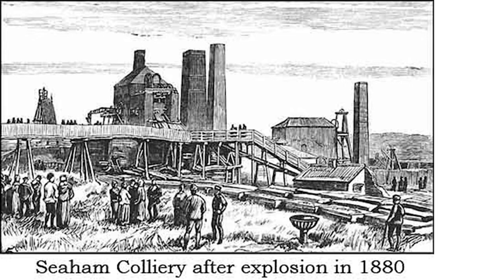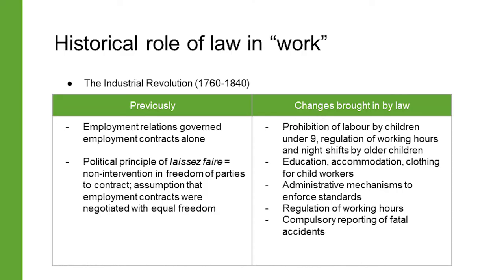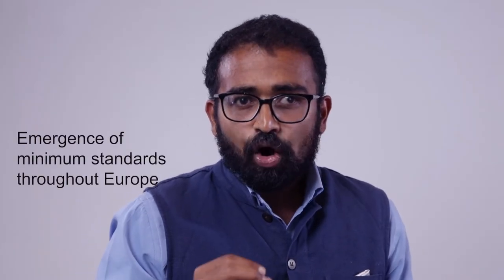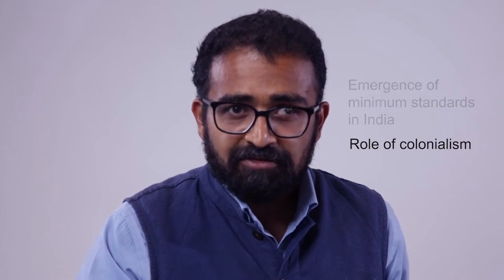The systematic reporting of fatal accidents was made compulsory, and basic safeguards for health and safety — especially in mines and in relation to boilers — were put in place. By the end of the century, nearly all European nations had a comprehensive set of regulations that affected work in nearly all industries. In India, however, there was an additional factor that led to the growth of law providing for the welfare of workers, and that was British colonialism.